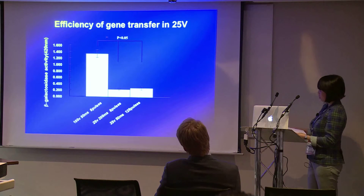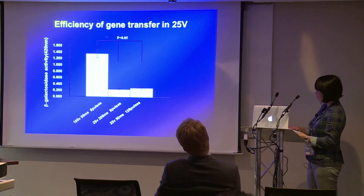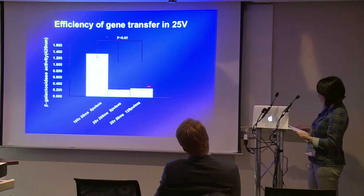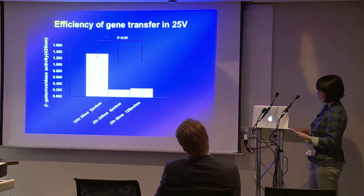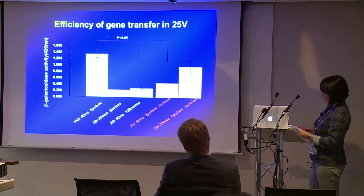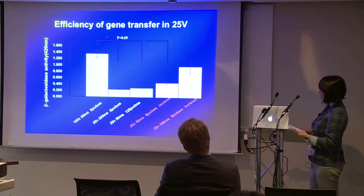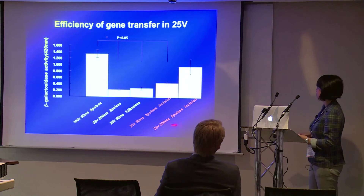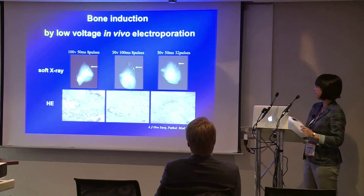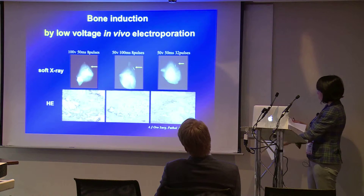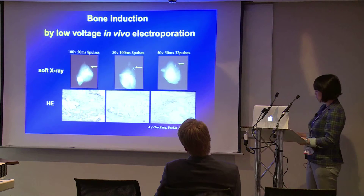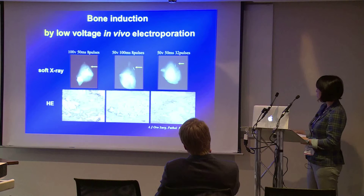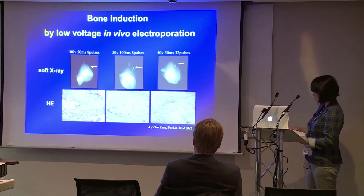Next we reduced the voltage to 25 volts — we could not recover the efficiency of gene transfer transcutaneously. But in the case of inside the skin with incision, we could recover the efficiency of gene transfer with a longer pulse duration of 200 milliseconds. We tried to induce bone formation in skeletal muscles of rats with lower voltage of 50 volts — bone formation was observed at the same level as the 100 volt condition.